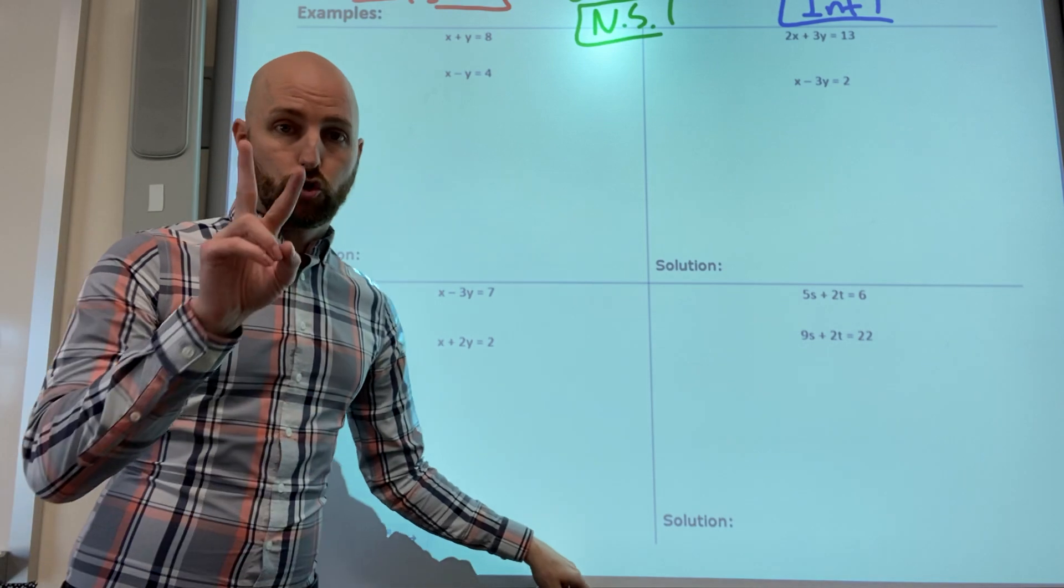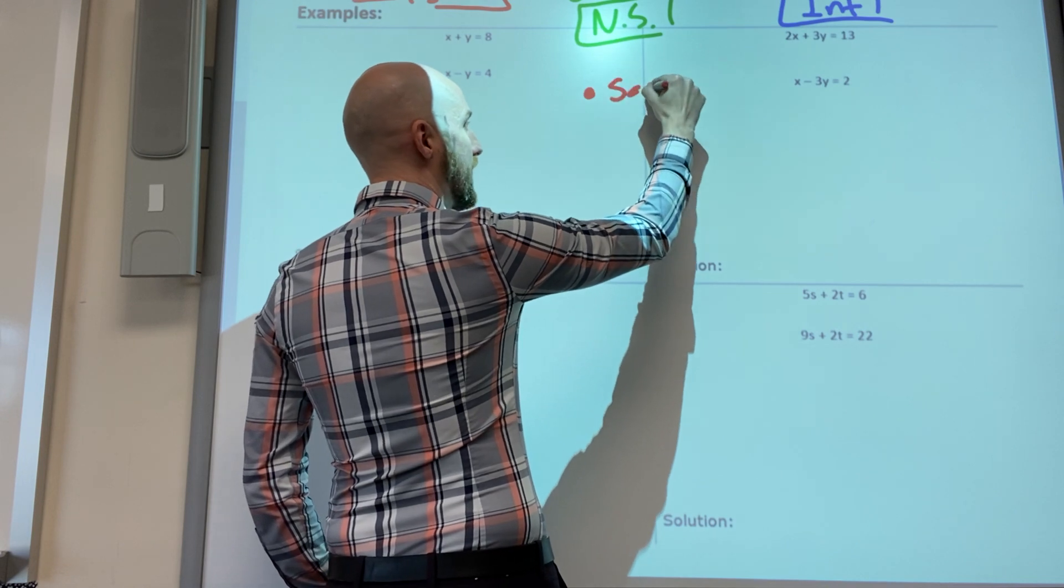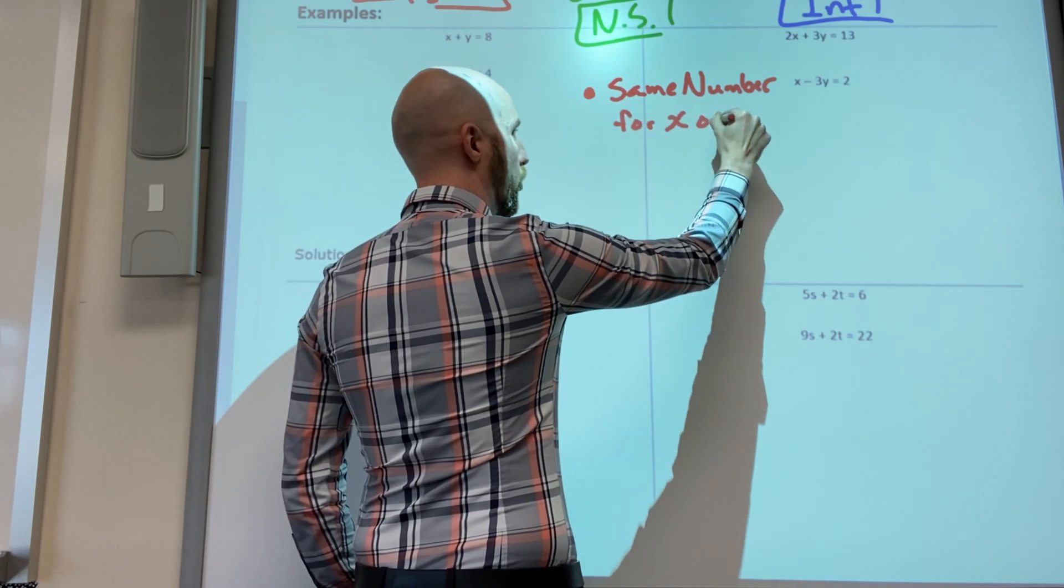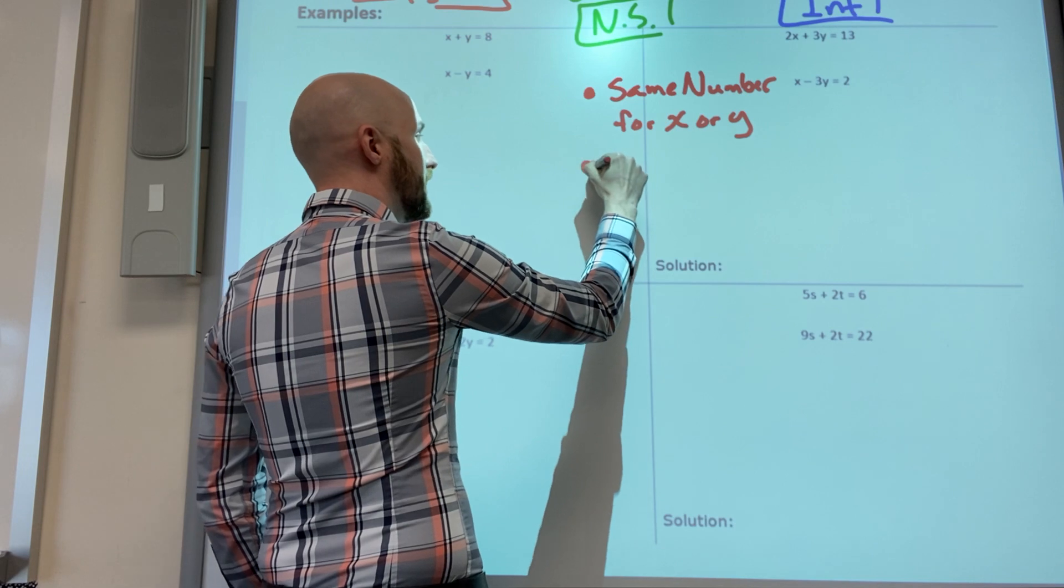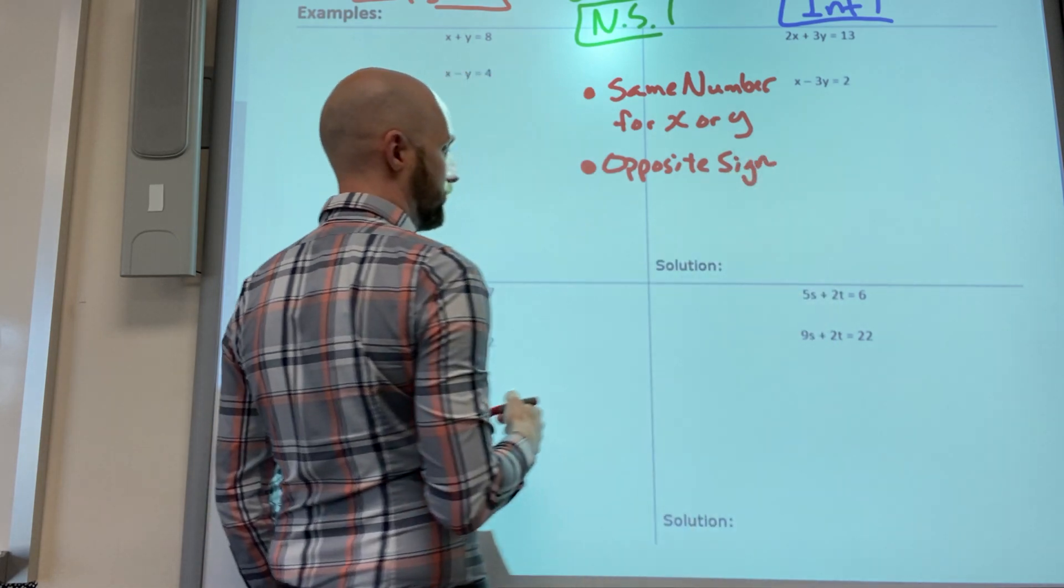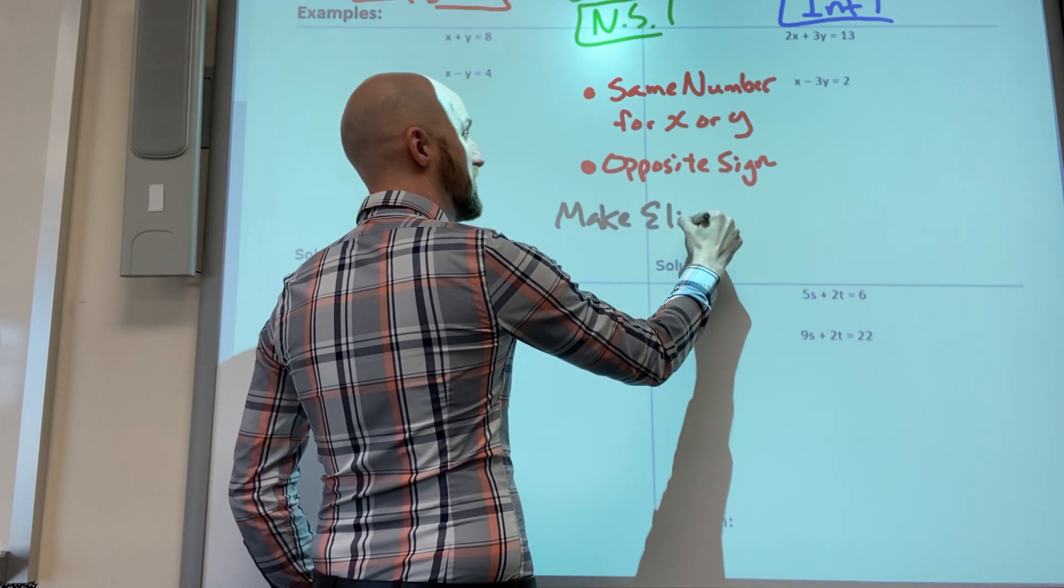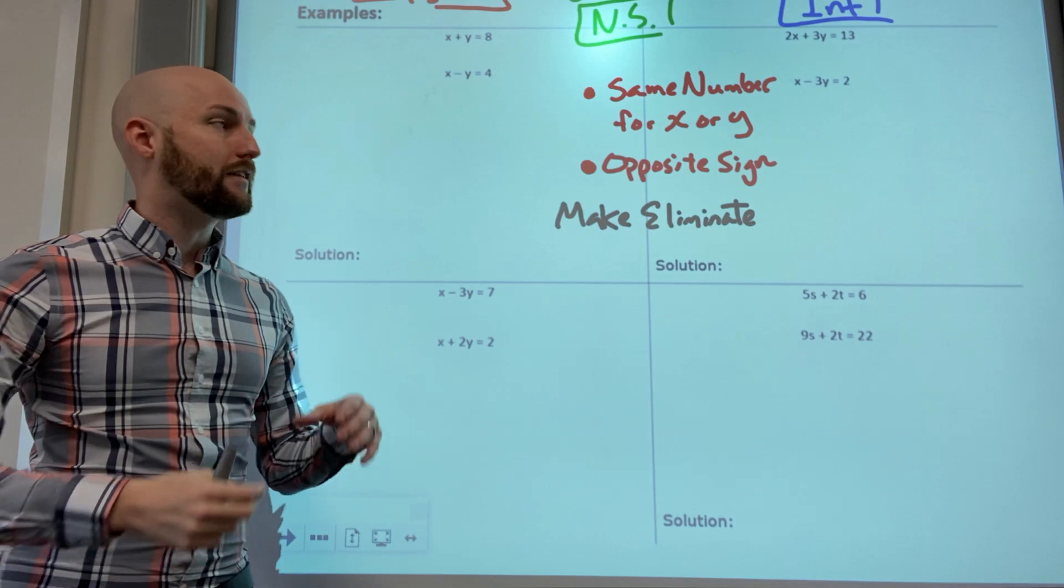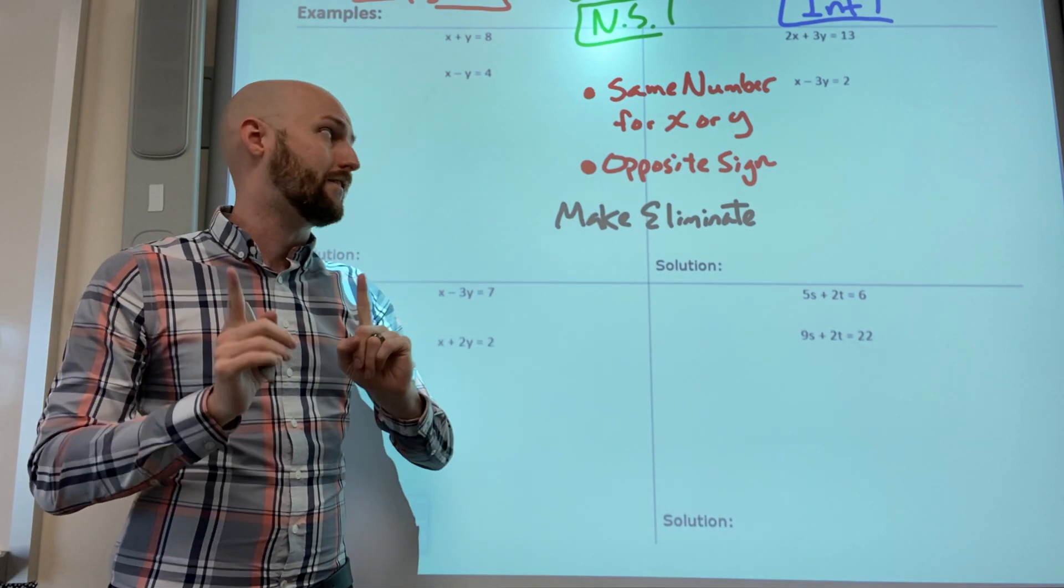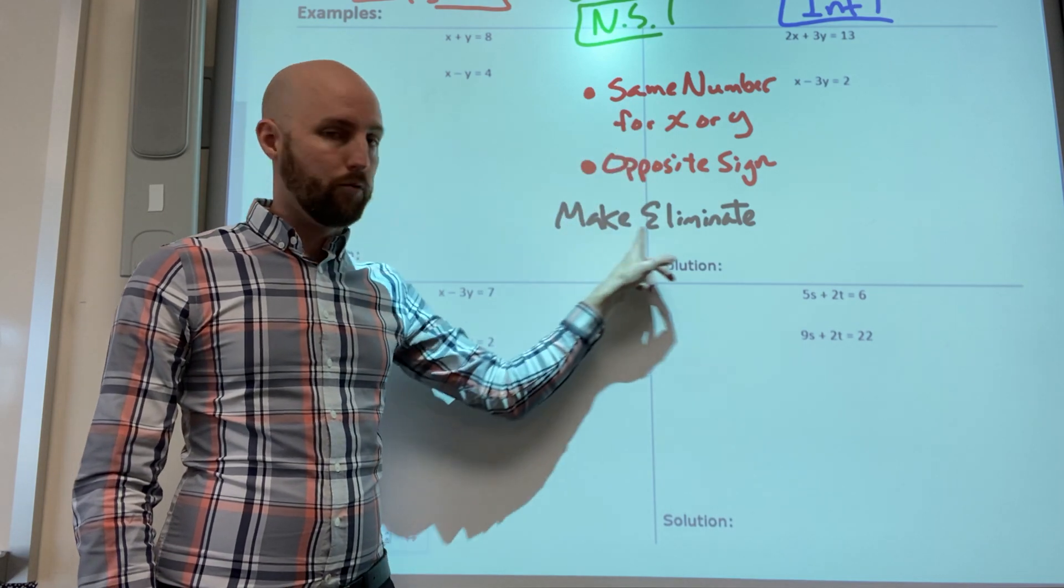For elimination I need two things: one, I need the same number for x or y, and I need opposite sign. That will make it eliminate. Voy a necesitar el mismo número en frente de la x o la y, no importa, pero el otro necesita mismo número pero signo opuesto y si tengo esas dos cosas puede hacer eliminación.